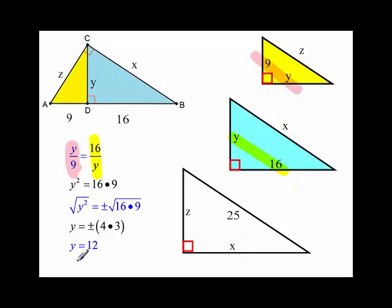Let's move on. Solving for Y. Y and 9 corresponds to 16 and Y. So I set it up as Y over 9 is equal to 16 over Y. Cross multiply, you get Y squared is equal to 16 times 9. And you can take the square root of 16 and 9, which is 4 and 3, and there's multiplication, so it's Y is equal to 12.